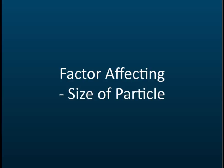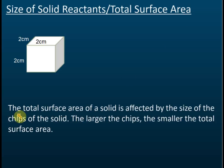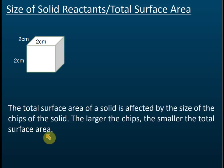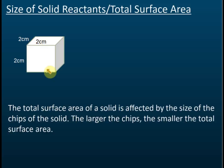The factors affecting the size of particles and the total surface area: the total surface area of a solid is affected by the size of the chips of the solid. The larger the chips, the smaller the total surface area. For example, consider a cube with dimensions 2 cm by 2 cm by 2 cm.